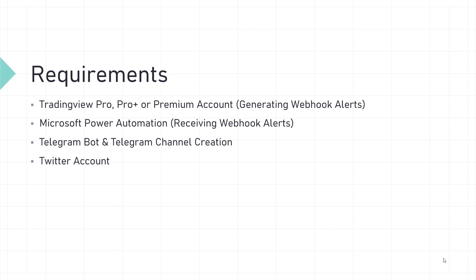The alerts are generated based on technical analysis. You also need access to Microsoft Power Automate — it's very easy, anybody can go and log in. You'll also need a Telegram bot and Telegram channel, and a Twitter account to transmit alerts generated from TradingView. I'm going to explain how to configure all of this within the next 10 minutes with zero coding knowledge.